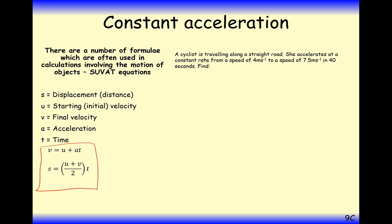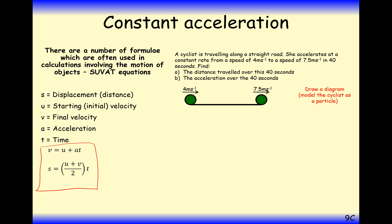Here's a question where we'll use one of them. A cyclist is travelling along a straight road. She accelerates at a constant rate from 4 metres per second to a speed of 7.5 metres per second in 40 seconds. Find the distance travelled and the acceleration over the 40 seconds. The way I would approach this is by drawing a diagram first — the particle starts at 4 metres per second, finishes at 7.5 metres per second over a time period of 40 seconds. So S is unknown, U is 4, V is 7.5, A is unknown, and T is 40 seconds.